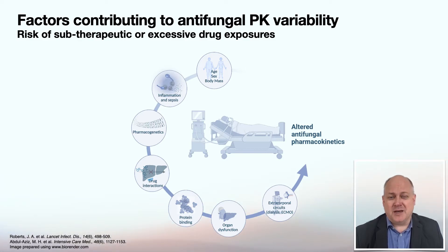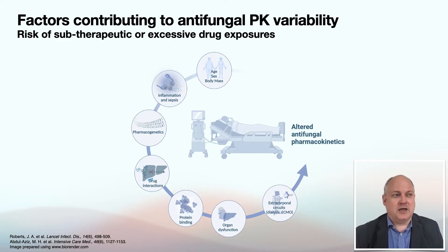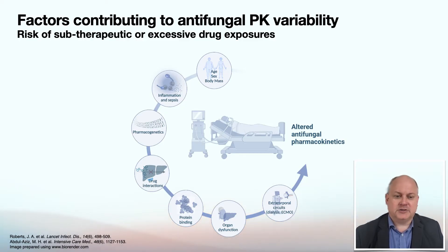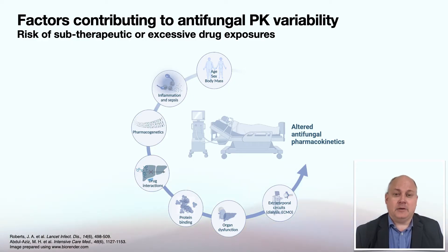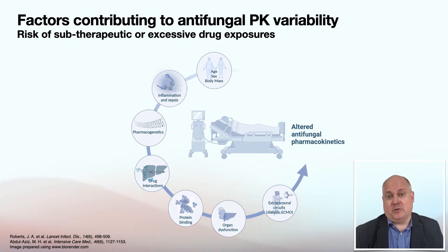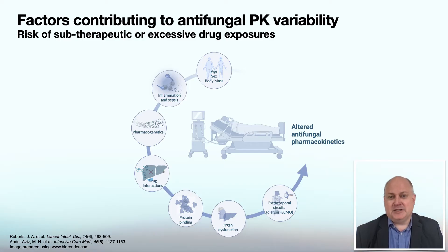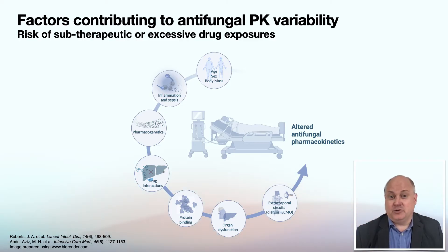Drug interactions continue to be a major issue, especially in these populations, affecting pharmacokinetics. Even things like protein binding and changes in albumin concentrations — hypoalbuminemia is common in critically ill patients — can change the volume of distribution of drugs. These patients in many cases will also have organ dysfunction, particularly renal dysfunction. If extracorporeal circuits are being used, such as renal replacement therapies or ECMO bypass, this changes considerably the volume of distribution of some antifungal agents and really necessitates an individualized dosing approach. These factors are often occurring concurrently, making it very difficult to predict how they will affect antifungal exposure.